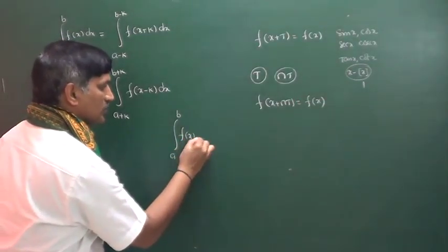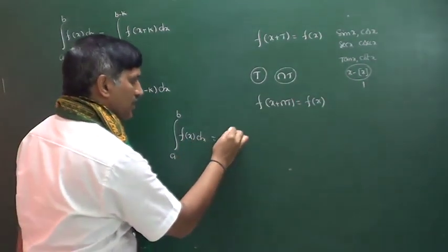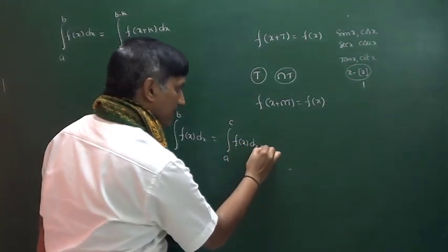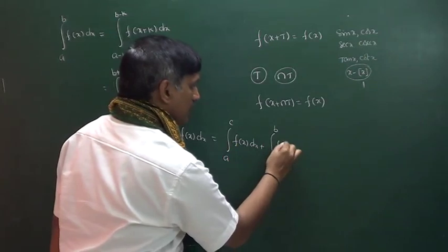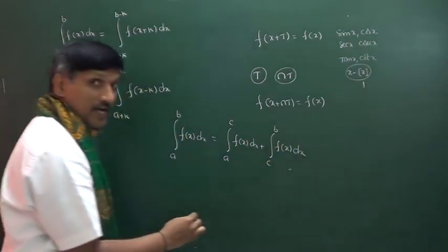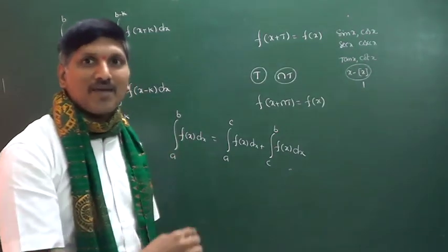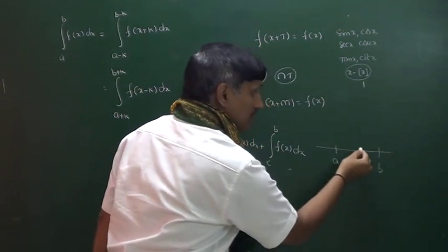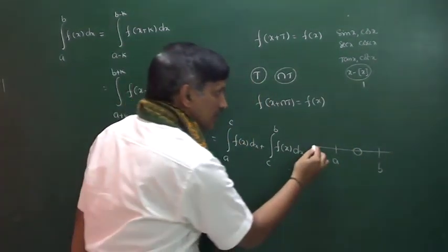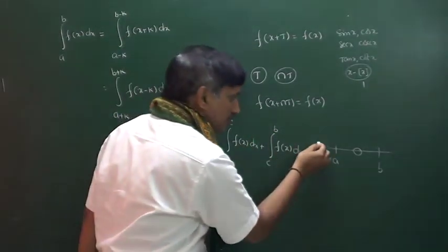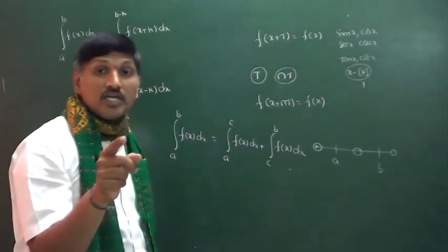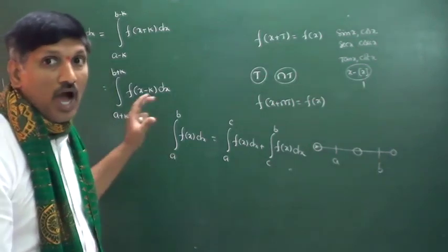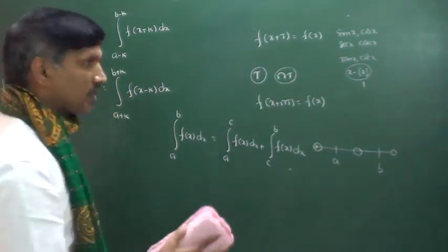Also, the integral from a to b of f(x)dx can be written as the integral from a to c of f(x)dx plus the integral from c to b of f(x)dx, where c may or may not lie between a and b. I hope you are all familiar with these particular ideas.